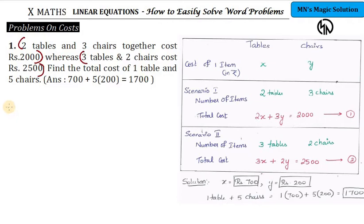Instead of writing 'let the cost of one table be X, let the cost of one chair be Y', using a tabulation makes it easier to understand and present the answer. We create a table with tables and chairs as concepts, and mention the cost of one item on the left side.